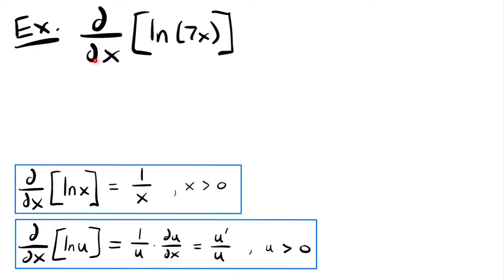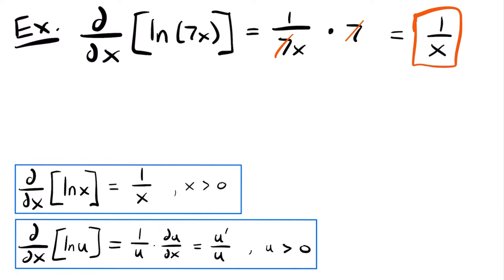For our example, to take the derivative of the natural log of 7x, 7x is our u. So we have 1 divided by 7x, multiplied by the derivative of 7x. The derivative of 7x is just 7, because the derivative of a variable to the first power equals its coefficient. Multiplying by 7, the 7s cancel out, and our derivative is equal to 1 divided by x.